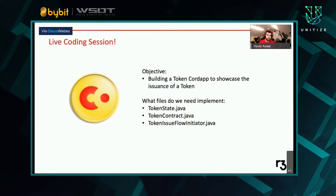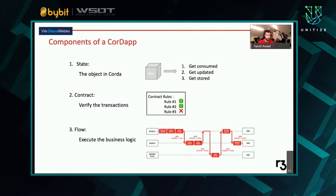So just to bring us into the live coding we're going to do today — we're going to build a CorDapp to showcase the issuance of a token. The files we need to implement are TokenState.java, TokenContract.java, and TokenFlowInitiator.java. Don't worry if you don't know what any of those mean yet — we're going to break down these different abstractions before we get right down to building them together.